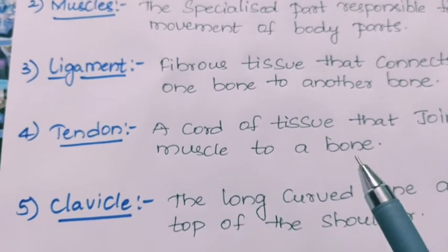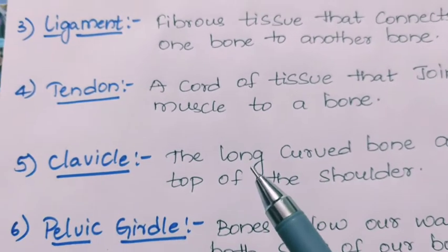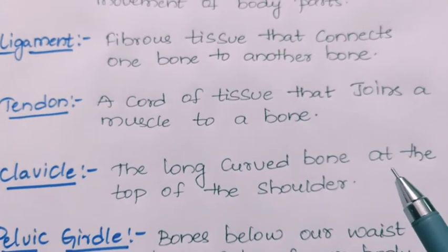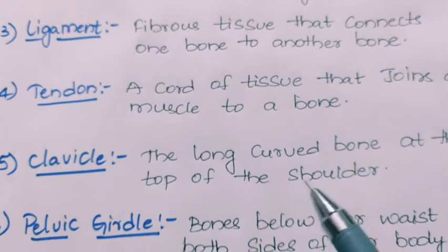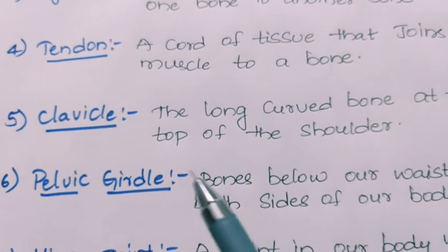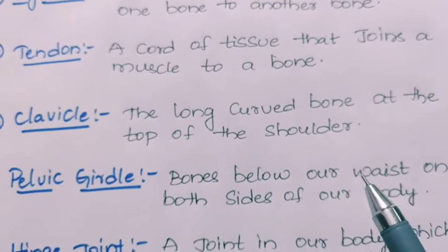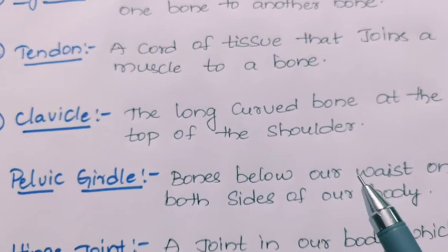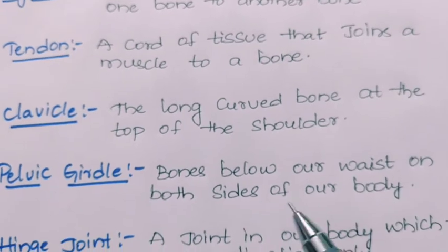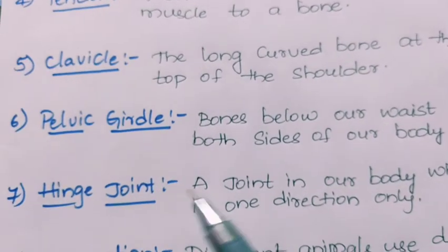Next, clavicle. Clavicle is the long curved bone at the top of the shoulder. Next, pelvic girdle. Pelvic girdle refers to the bones below our waist, present at our waist on both sides of our body.